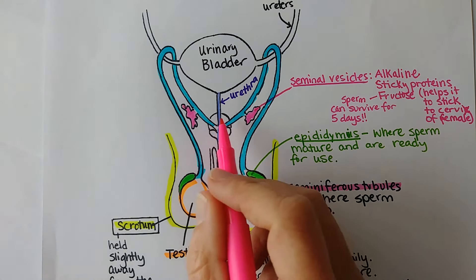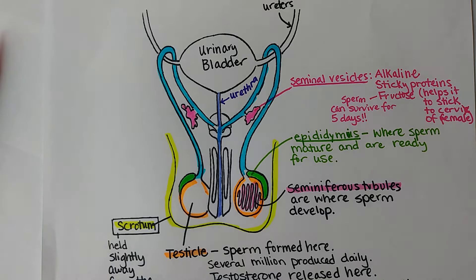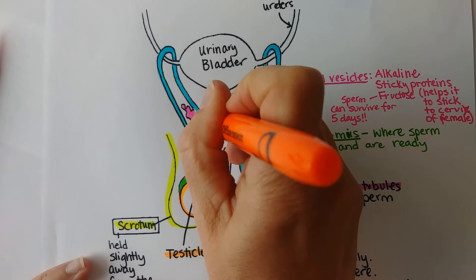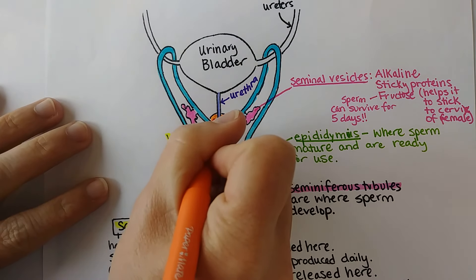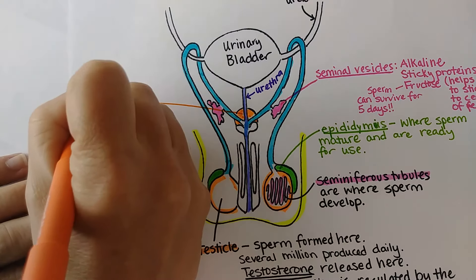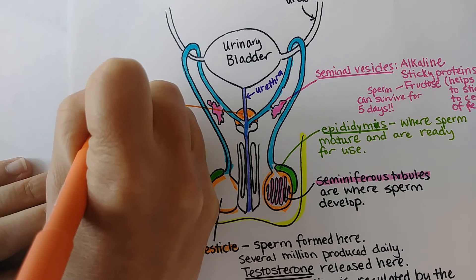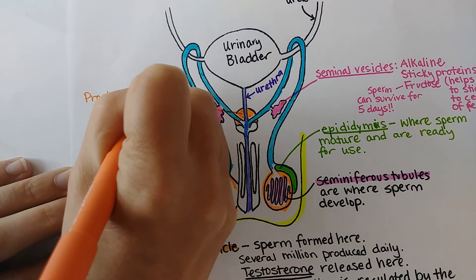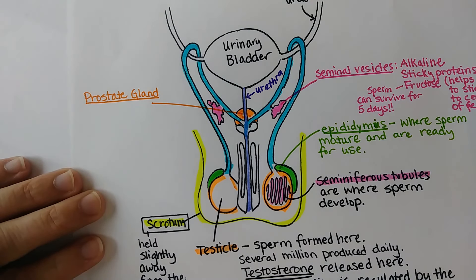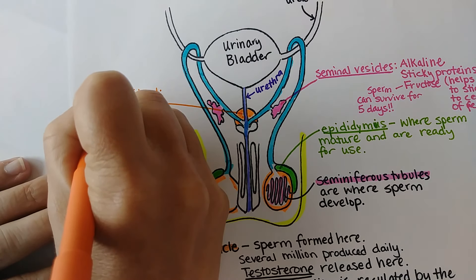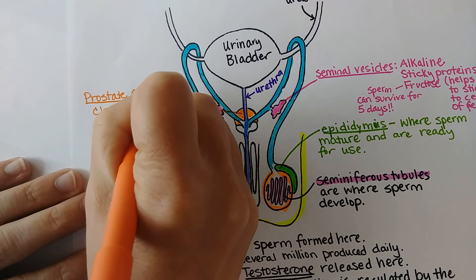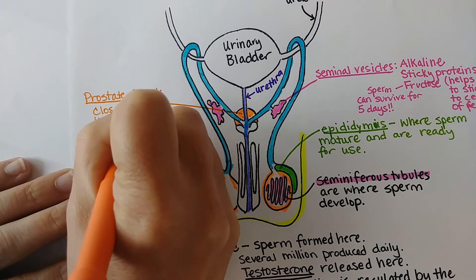The sperm travel through the prostate gland, which adds a little bit of fluid. An important function of the prostate is that it has smooth muscle, which contracts to close off the urethra during ejaculation, ensuring that semen and urine don't mix even though they share the same exit point.